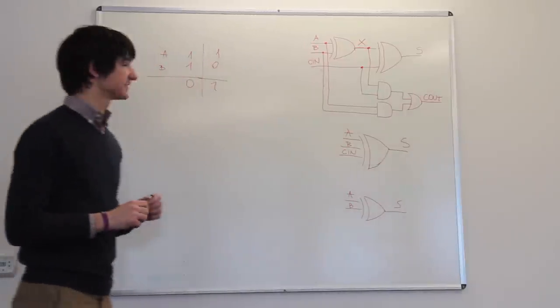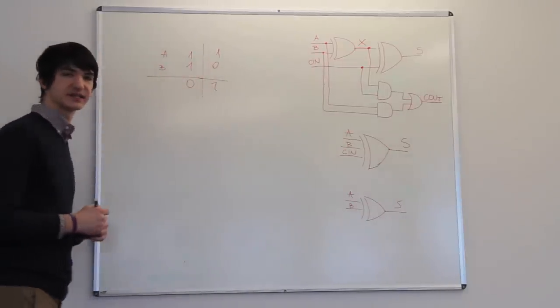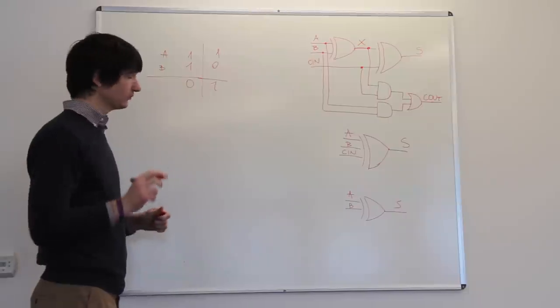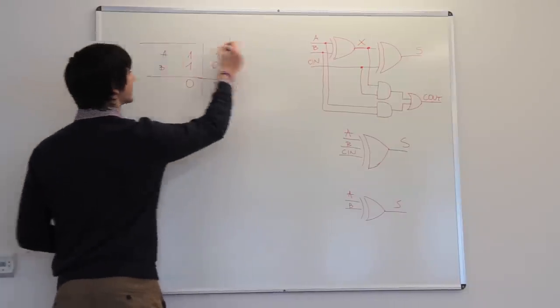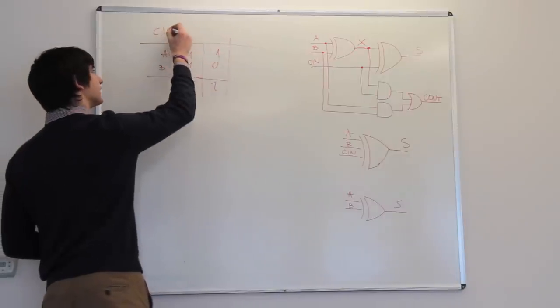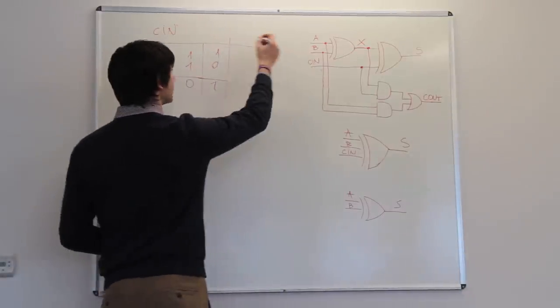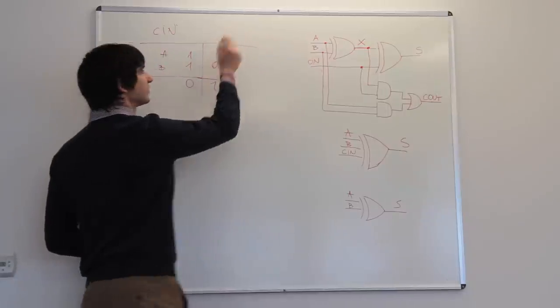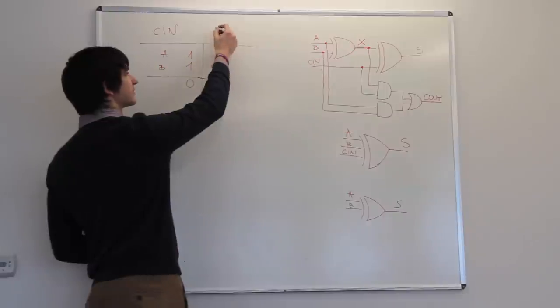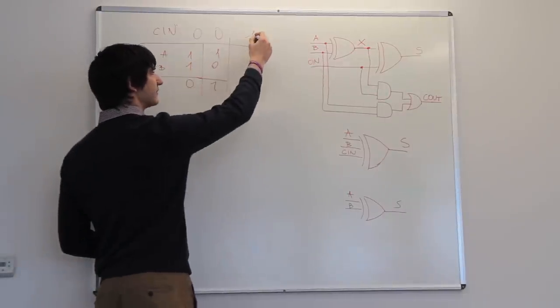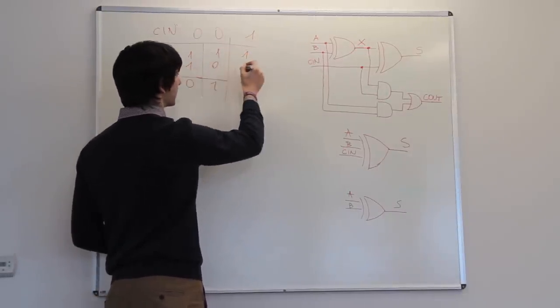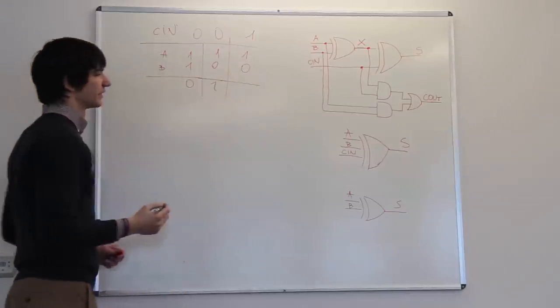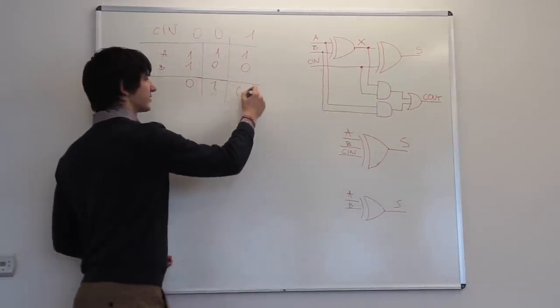We need to further expand this to take into consideration carries. So introducing the carry, carry n. If you have a carry of zero, and you would have an a of one and a b of zero, you would have an even number of ones, so your output would be zero.